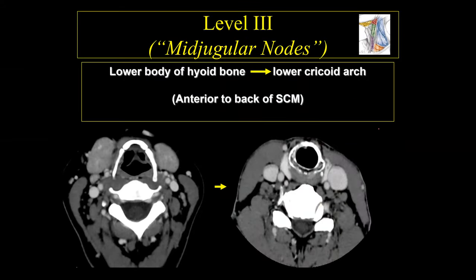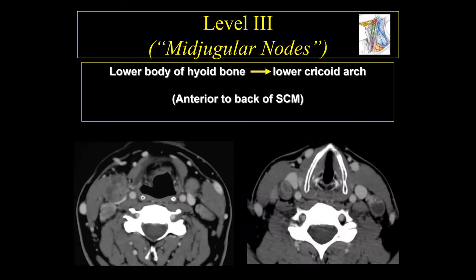The level 3 lymph nodes run from the base of the hyoid bone all the way down to the base of the cricoid cartilage. When we draw the line connecting the back of the sternocleidomastoid muscle, all of that region is a level 3 lymph node. For example, a lymph node at the level of the cricoarytenoid joint — below the hyoid bone but above the base of the cricoid — is a level 3 lymph node.